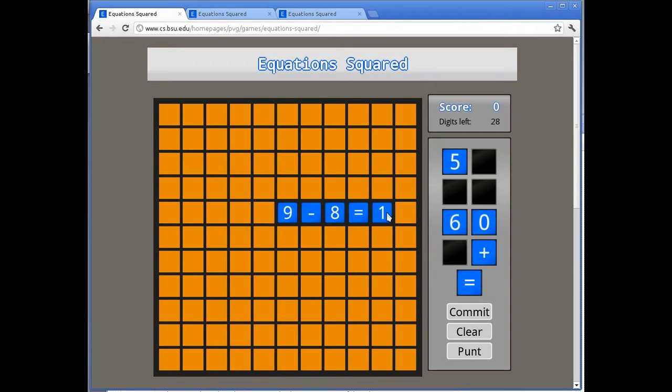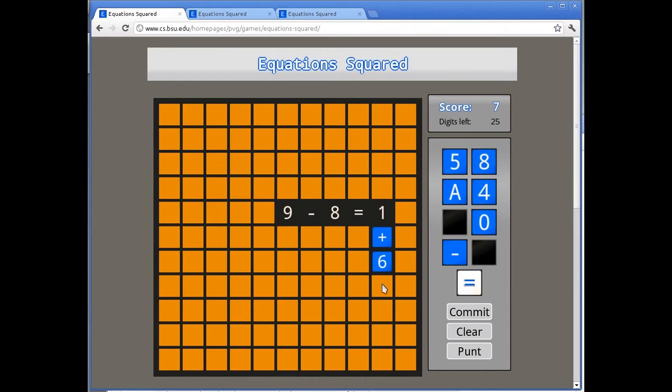Now, because this is a true equation, I'll earn points for it. If I try to play something that's not true, such as 1 plus 6 equals 4, I get the unbalanced equation message.